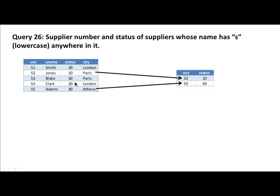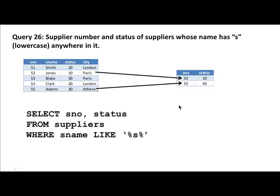Jones has a lowercase s, Adams has a lowercase s. Smith doesn't figure because it doesn't have a lowercase s — it has an uppercase S, so it doesn't actually figure. How do you get this? SELECT supplier number, status FROM suppliers WHERE supplier name LIKE — and notice how we use the same percent wildcard character but differently. We say LIKE percent, lowercase s, percent. That means it can have any number of characters before the lowercase s and zero or more after, but somewhere it has to have an s.